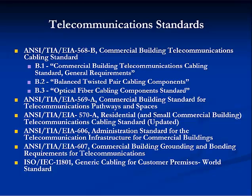The telecommunications standards you should be aware of include, first, the TIA-EIA 568 commercial building telecommunications cabling standard — the mother of all standards. 568 includes three parts: B1, general requirements; B2, for copper or balanced twisted pair cabling; and B3, which addresses optical fiber. Complementing 568 is 569A, which deals with pathways and spaces. 570 addresses residential or small commercial buildings. 606 deals with the administration of cabling systems, and 607 addresses grounding and bonding requirements.